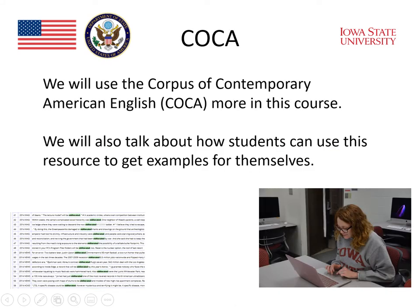Those examples of the word 'obliterated' in many different sentences came from the Corpus of Contemporary American English, or COCA, as we call it. We are going to use this corpus more in this course and learn more about it. We'll also talk about how students can use this resource to get examples for themselves. This is a large collection of American English texts used for linguistic research. Because it is available on the internet, you can use it, other teachers can use it, and so can your students.